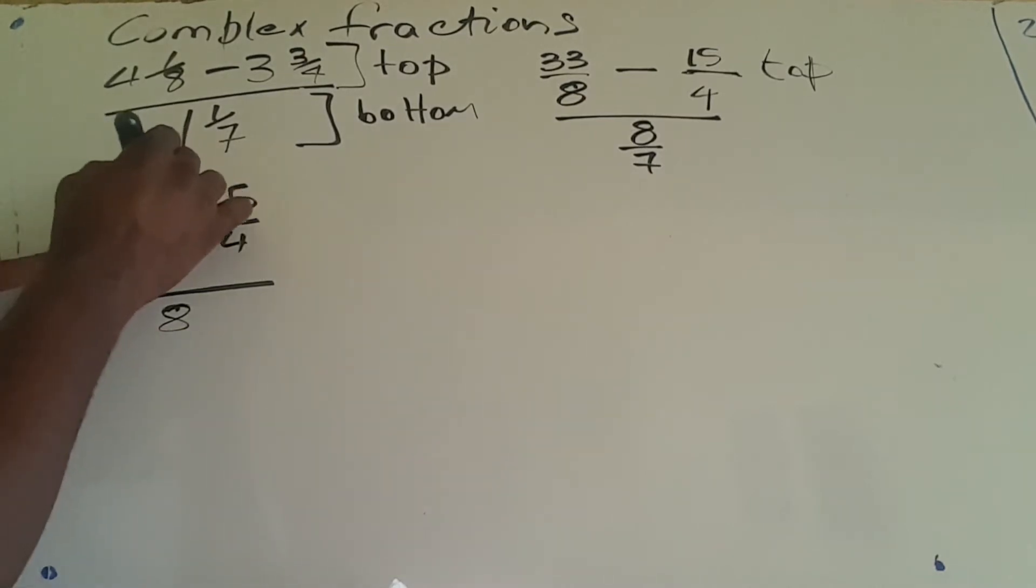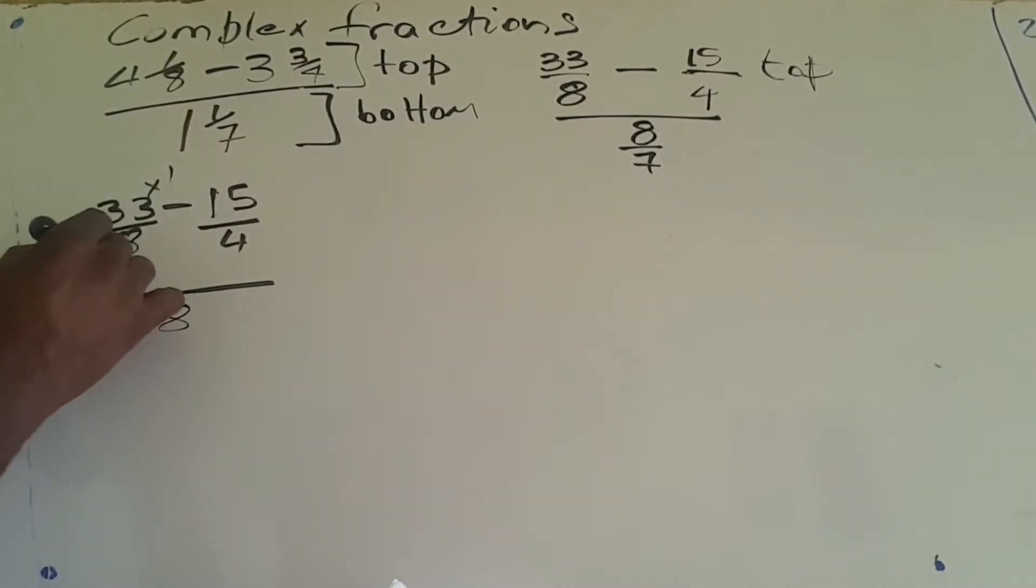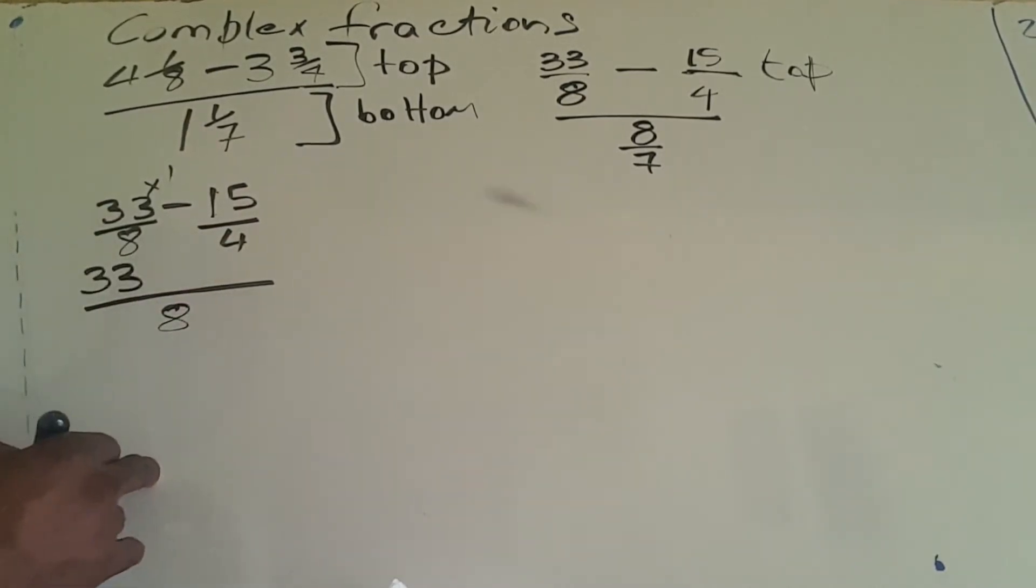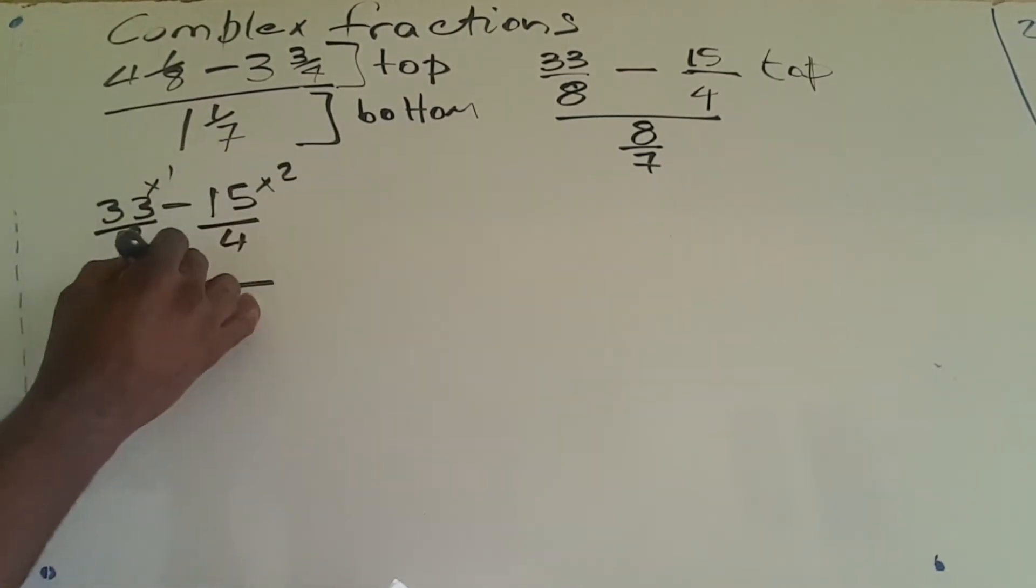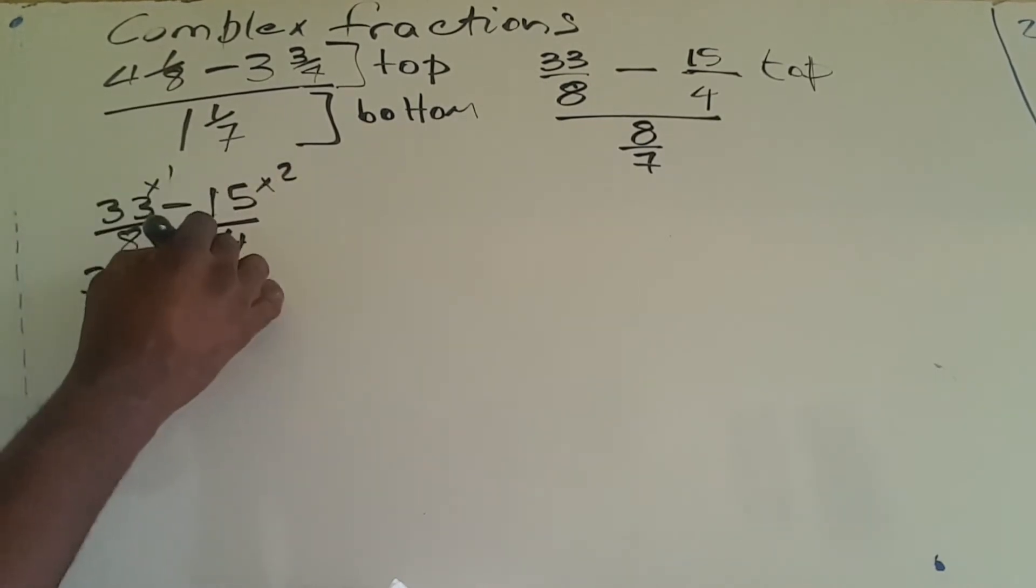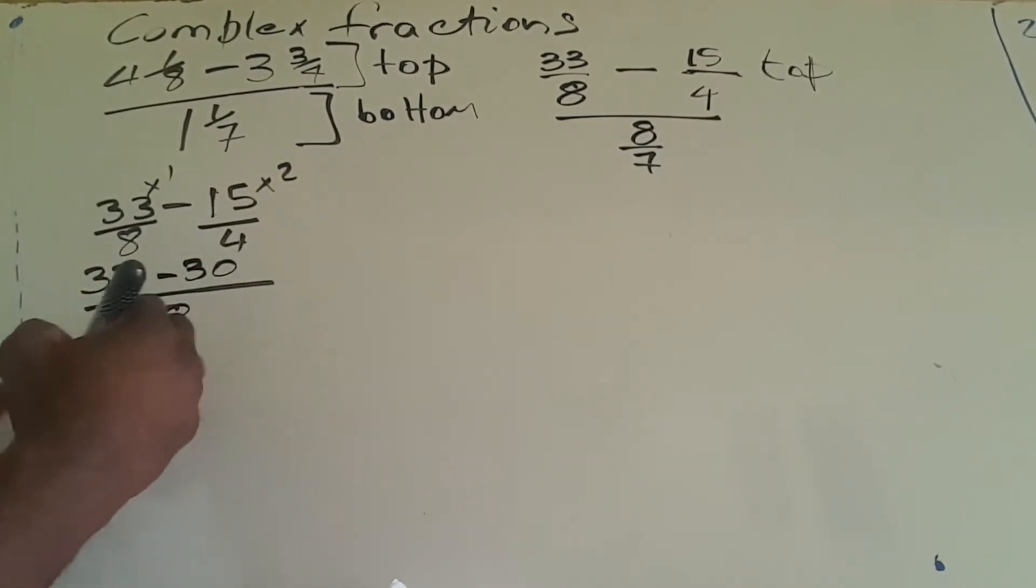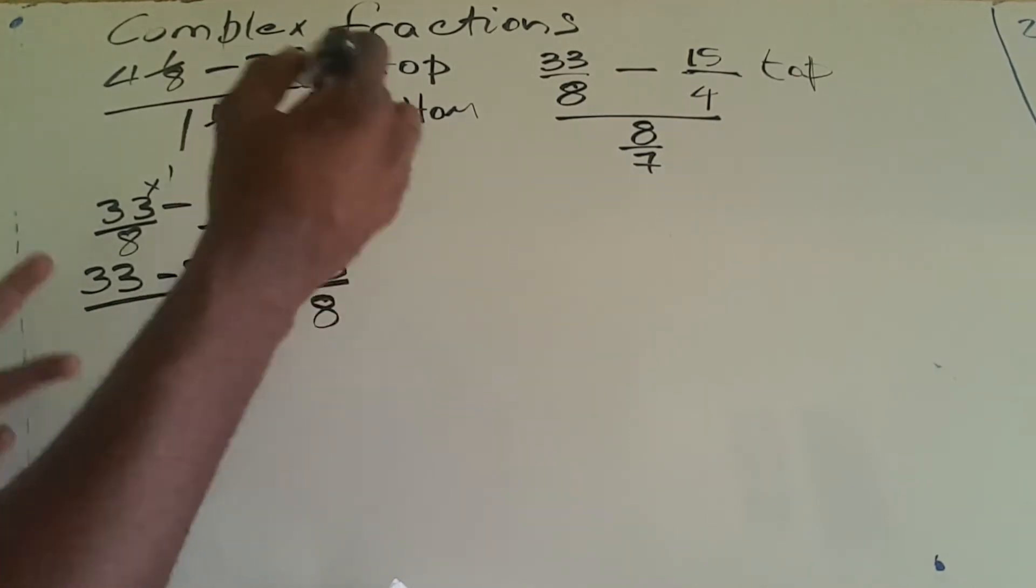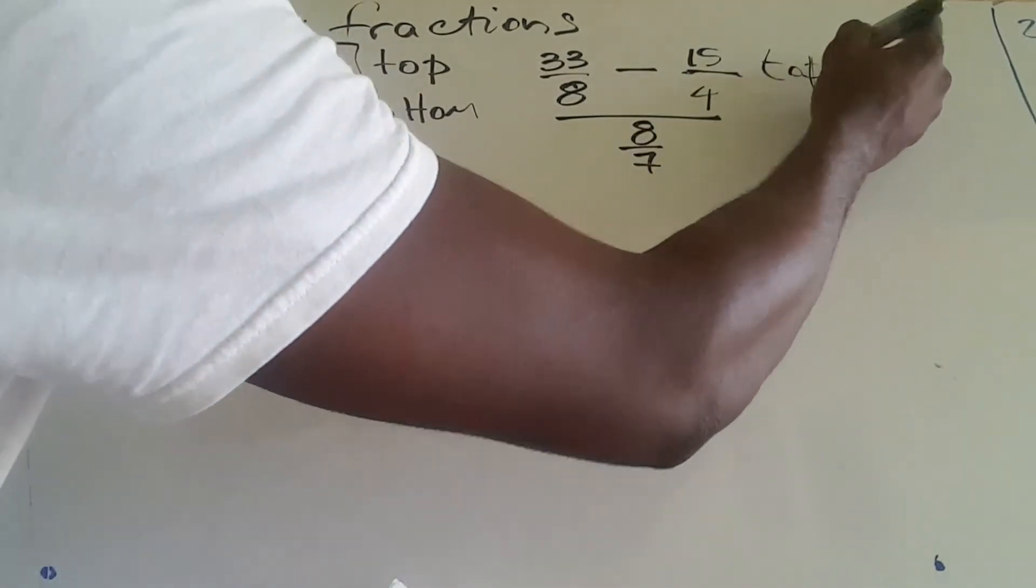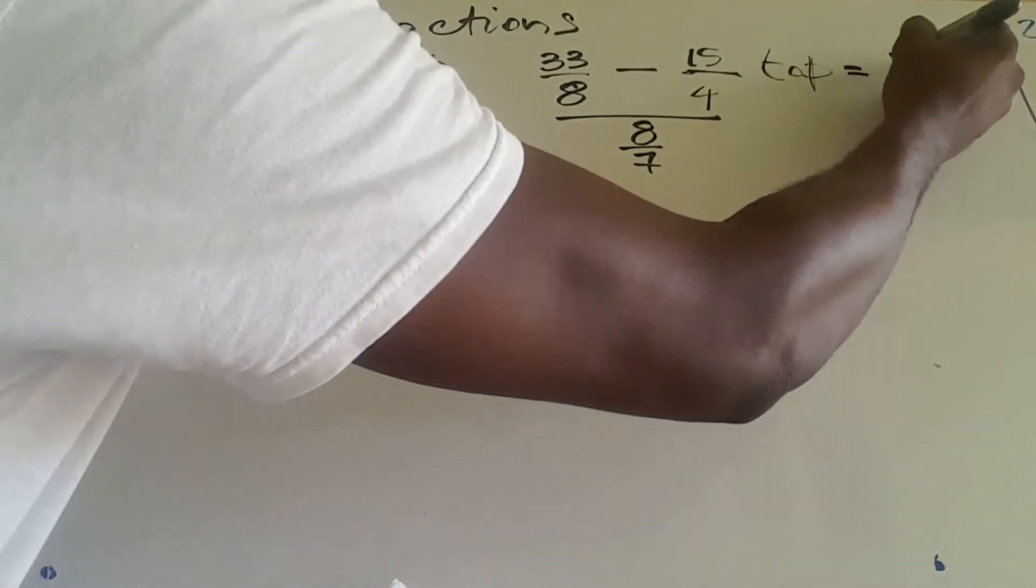4 into 8 is 2 times. 2 times 15 is 30. 33 minus 30 is 3 over 8. This is for the top, so my top part came to 3/8.